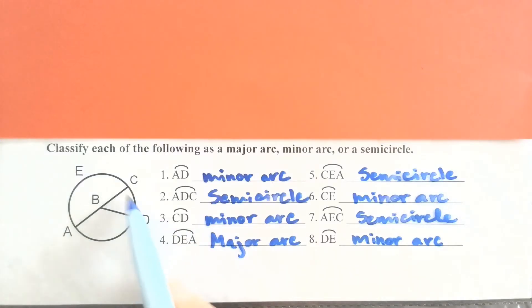Number three, arc CD is a minor arc. Arc DEA, make sure you go in the right direction this way, DEA is a major arc. CEA is a semicircle. CE is a minor arc. It doesn't actually have to be a segment going to E for there to be a point there. Arc AEC would be a semicircle. This is actually the same semicircle as CEA, kind of like when we say angle CEA or angle AEC. These are the exact same semicircle, just different notation. And then arc DE, we would want to go the shorter route and not the longer route because it is a minor arc with just those two letters.